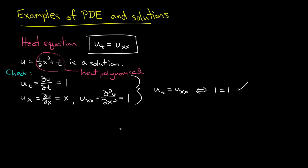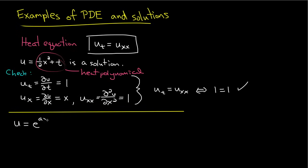Now let's do something a little different and try to find a solution to the heat equation by making a guess — often called an ansatz. It's a little smarter than a guess: it's an assumption that the solution has a certain form. We're going to assume the solution has the form e to the ax plus bt. The question is: what do a and b need to be in order for this to be a solution to the heat equation?